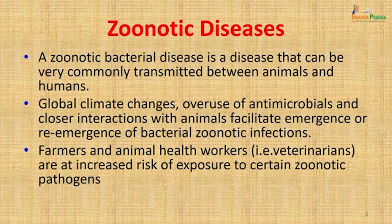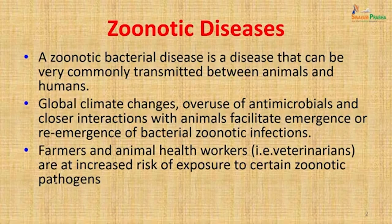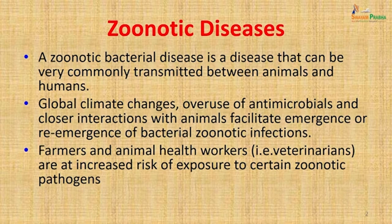What is a zoonotic disease exactly? A zoonotic disease is a disease that can be very commonly transmitted between animals and humans. Though various diseases can be transmitted, in today's topic we are concentrating on bacterial diseases transmitted between animals and humans. Globally there have been climate changes, overuse of antimicrobials, and closer interaction with animals which facilitate the emergence and re-emergence of bacterial zoonotic infections.